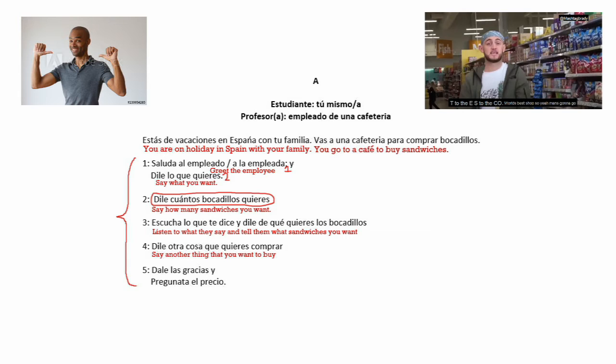Then afterwards you have to say another thing that you want to buy. This could be a bottle of water — 'un boteo de agua' — a cake — 'un pastel' — or anything else you can think of that you could buy at a cafe. And then finally you have to say thank you and ask for the price: 'Gracias, ¿y cuánto cuesta?' And that is Section A.